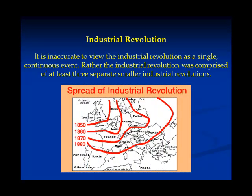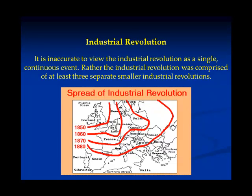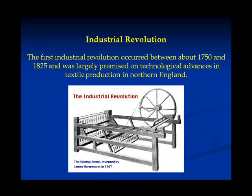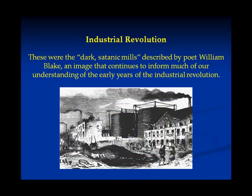It is inaccurate to view the Industrial Revolution as a single, continuous event. Rather, the Industrial Revolution was comprised of at least three separate, smaller industrial revolutions. The first Industrial Revolution started in approximately 1780 and carried on until about 1825, and was largely premised on technological advances in textile production in northern England. These were the dark satanic mills described by the poet William Blake, an image that continues to inform much of our understanding of the early years of the Industrial Revolution.